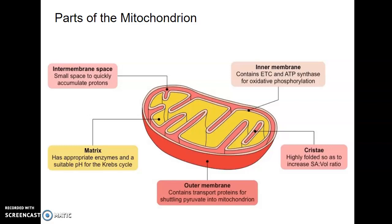There are three main types of proteins in the inner mitochondrial membrane. First are the proteins involved in the oxidative reactions within the electron transport chain, because this is where the electron transport chain happens. Second is ATP synthase, which is the protein that actually produces ATP. Third are general transport proteins that move the molecules involved in respiration across the membrane. Importantly, this is also where the electrochemical gradient of hydrogen ions is established, which is why this membrane must be selectively permeable to small ions.